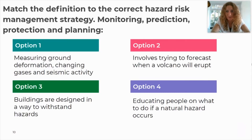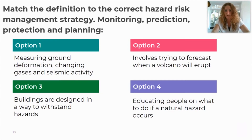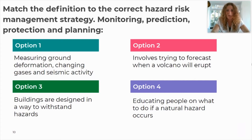Before the main task, it's important we're clear on all management strategies. On screen are the four options for managing hazard risk, each with a description. Decide which one is monitoring, which is prediction, which is protection, and which is planning. Pause the video if you need to think about it, then we'll go through it.